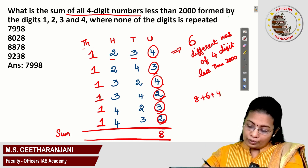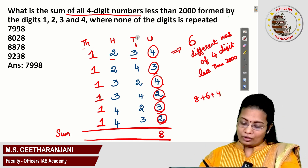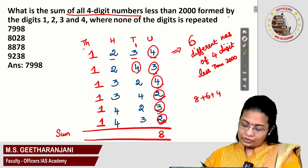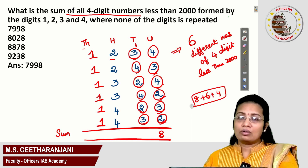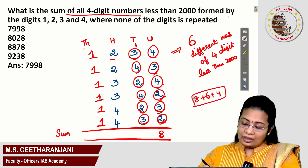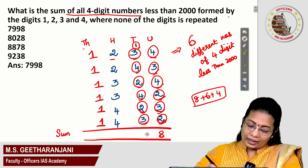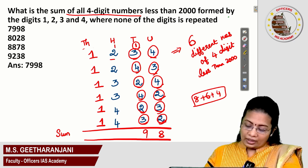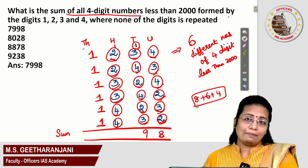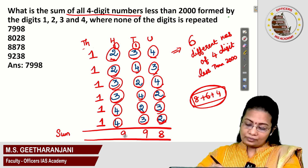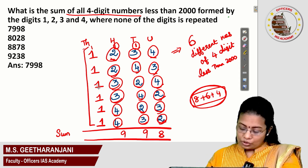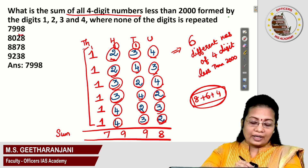So I put carry over 1. In the tens place also, we got two 4s, two 3s, and two 2s. The sum is again 8+6+4=18, but with carry over 1 it becomes 19 — write 9 and carry over 1. In the hundreds place again we got two 4s, two 3s, two 2s, which equals 18, plus carry over 1 gives 19. At the final thousands place, we got 1 repeated 6 times — that is 6 — plus carry over 1 from hundreds gives 7. So the sum is 7, 9, 9, 8 — that is 79,98.